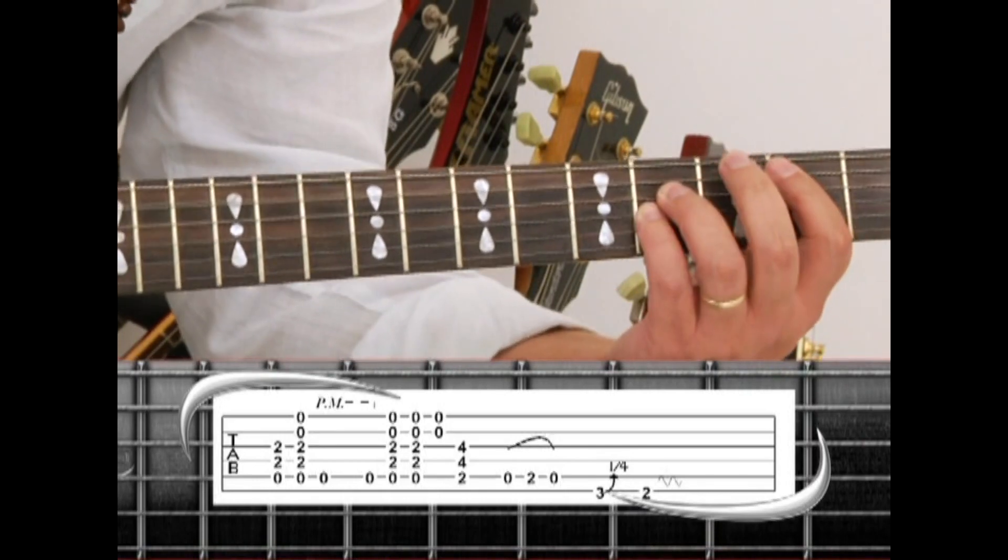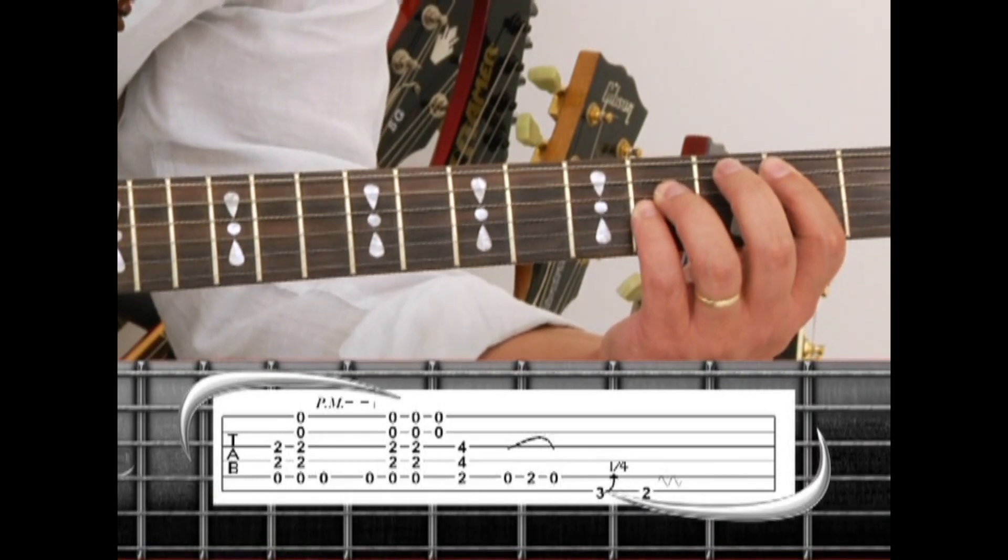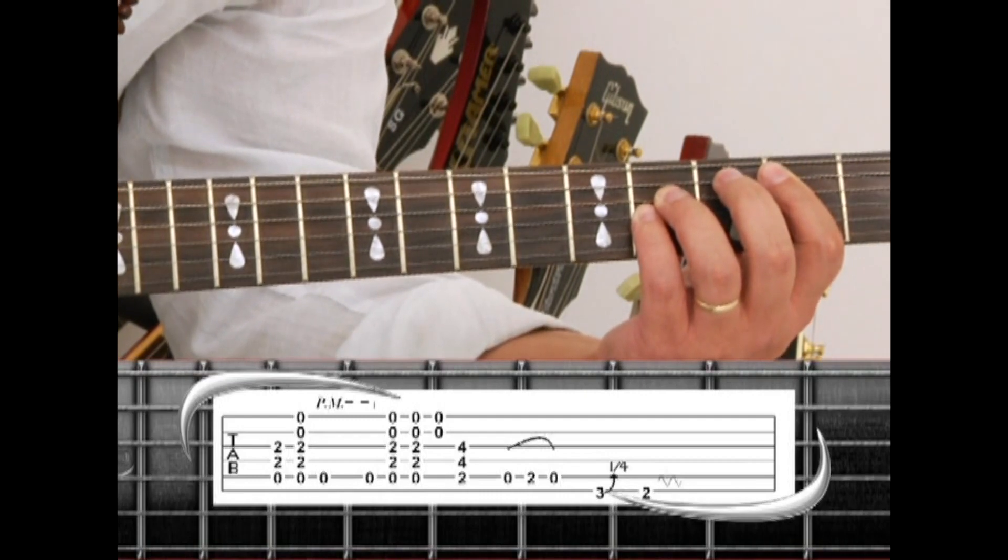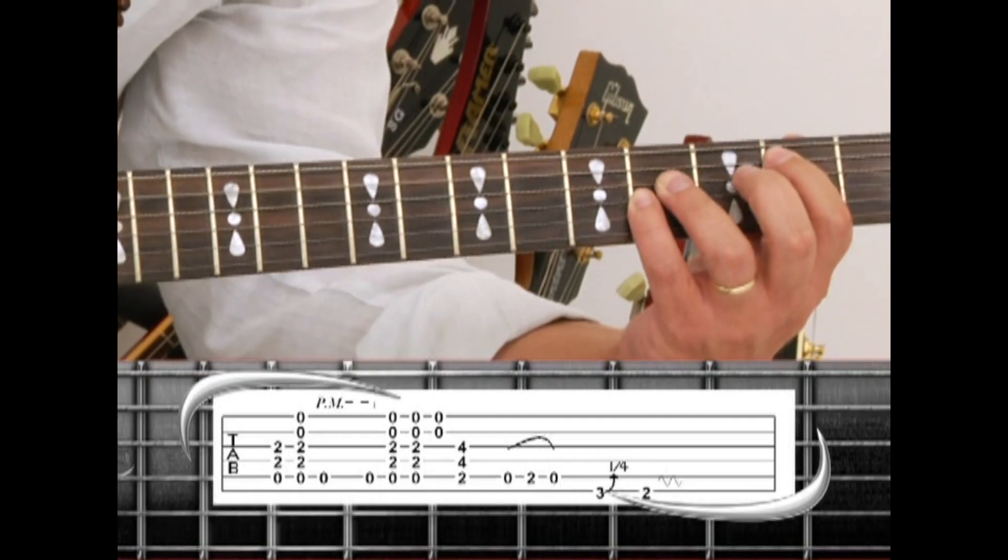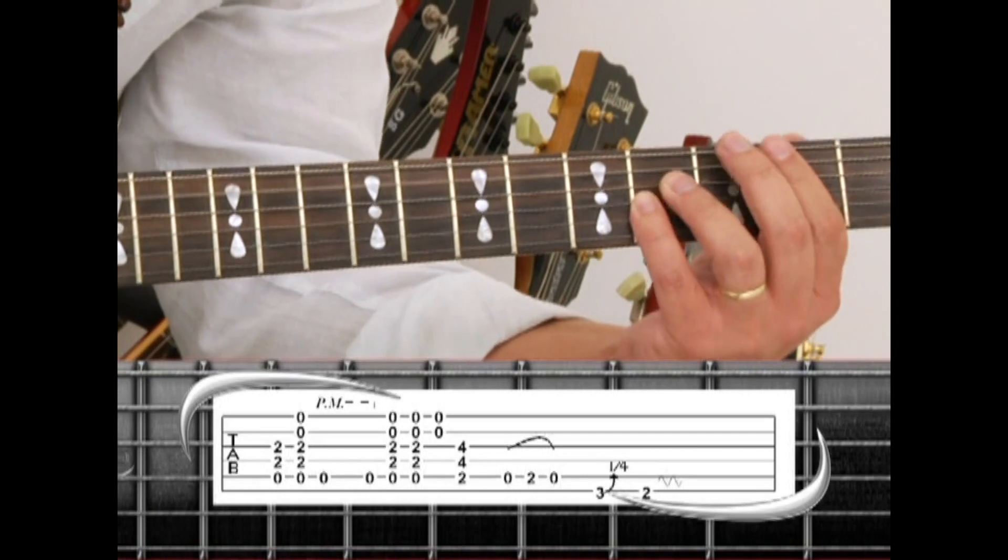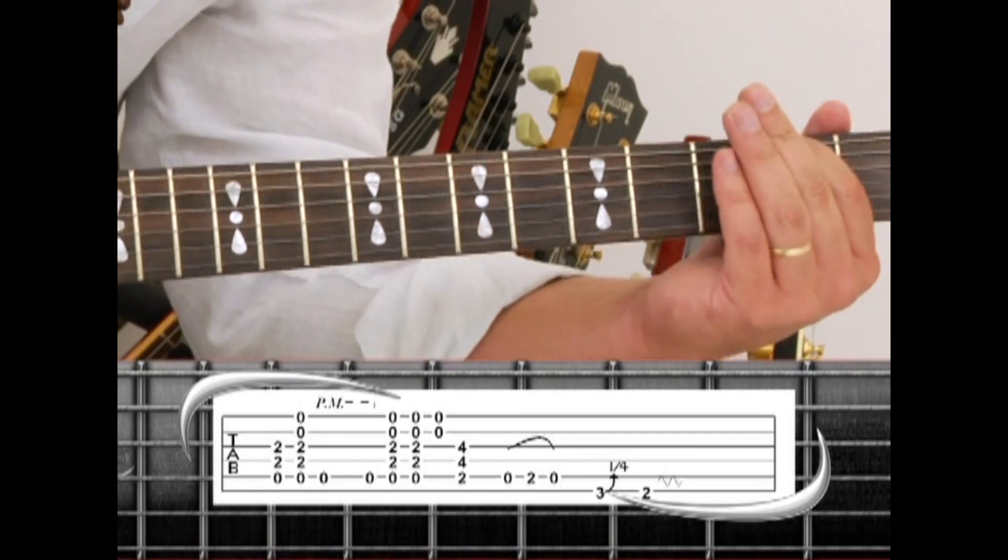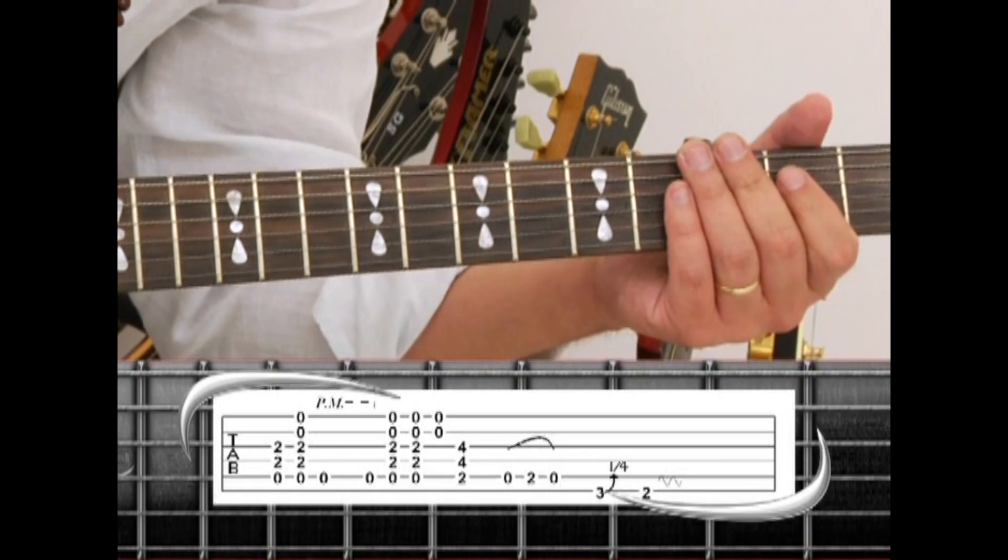Switch to B. Then walk down, this time hammering. The 5th string open to 2. Pull off to open. 6th string 3 to 2 with vibrato.